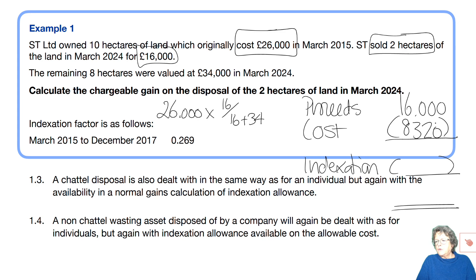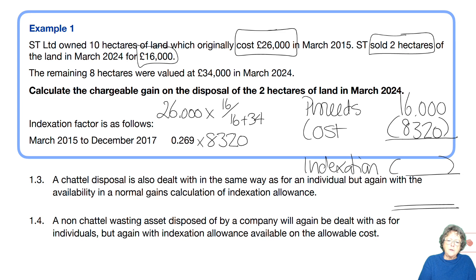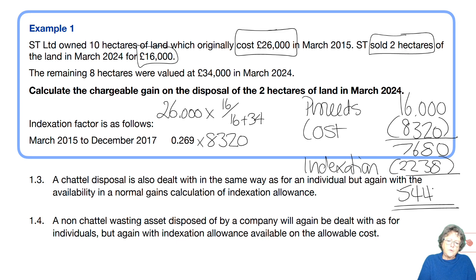That £8,320 needs to be multiplied by the indexation factor. You should have watched the other lectures regarding indexation allowance — I'm assuming you have and therefore I'm not explaining this further. So £8,320 times 0.269 gives us £2,238. Our gain at the end of the day is £5,442. You can see that as a nice multiple choice question in section A.